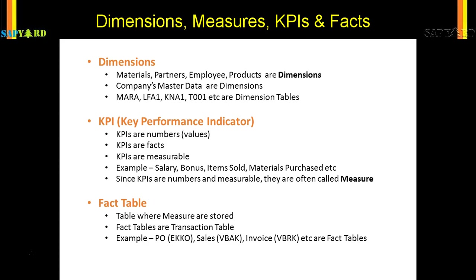When you do modeling, you would always hear the term 'fact table'. They will say join this dimension table with the fact table. Fact tables are nothing but the transaction tables — the tables where the measures, KPIs, or numbers are stored. The purchase order table, the invoice table, the delivery table, the sales table — where you have the facts, such as on day one we purchased 100 items, on day two we sold 90 items. The table which stores those facts is known as the fact table.